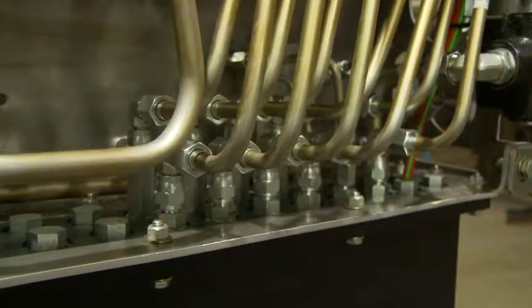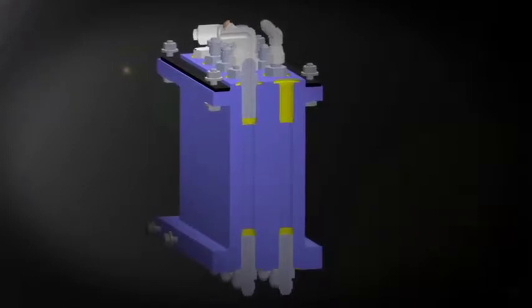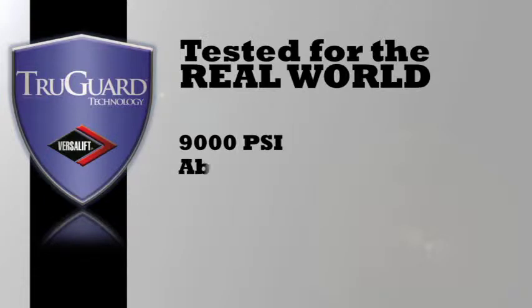TruGuard technology was developed for the real world. We use standard JIC fittings and we also use some extended o-ring fittings into the TruGuard itself to make it much more mechanic friendly. We need to make the TruGuard durable. That's why it was designed to exceed all ANSI A92.2 standards for hydraulics components. We also tested it at extreme temperature and pressure ratings because that's what our aerial equipment is required to do. It was tested to 9,000 psi. It was also tested above 200 degrees Fahrenheit and it was also cycle tested below minus 40 degrees Fahrenheit.